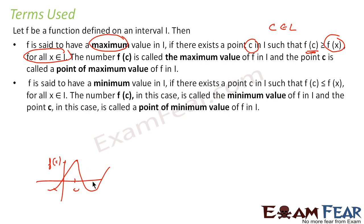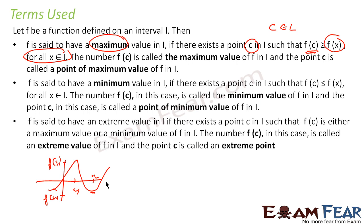Similarly, for minimum: if there is a point c2 such that f(c2) is less than or equal to f(x) for all x, then c2 is called the point of minimum value and f(c2) is called the minimum value. Extreme value is a general term for both maximum and minimum value. The way we find extreme values is simple: differentiate the function, and where the slope is zero, that is an extreme value.